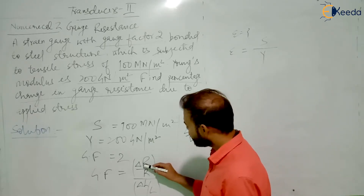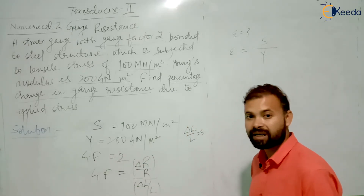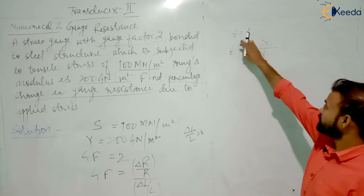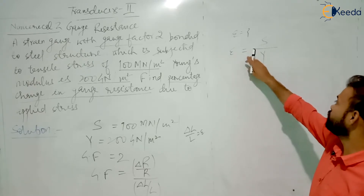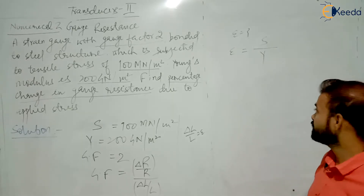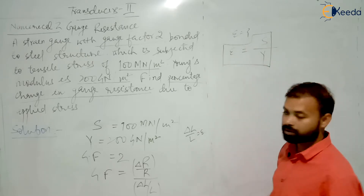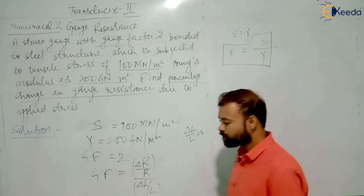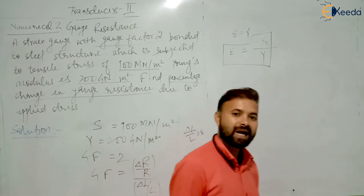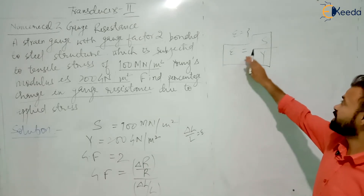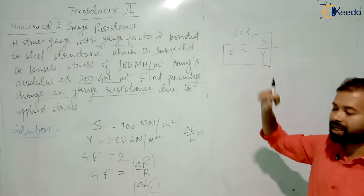Basically, you have to only calculate delta R by R in this question. Gauge factor is already known — it is given as 2. There is another formula to calculate strain: strain epsilon is equal to stress divided by Young's modulus. In every question, if stress and Young's modulus are given, then strain can be calculated from this formula.